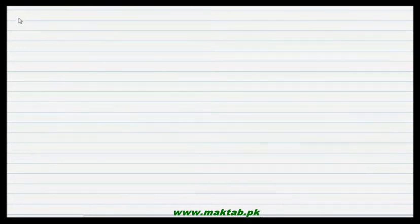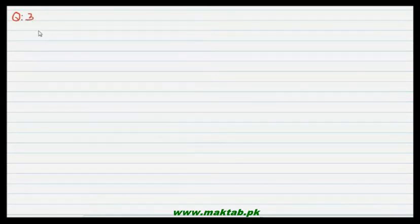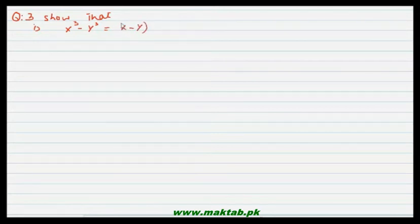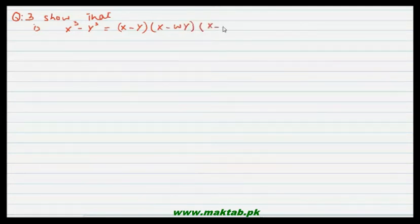Then is question number 3. Question number 3 is to show that: in the first part, x raised to power 3 minus y raised to power 3 is equal to x minus y, into x minus omega y, into x minus omega square y.